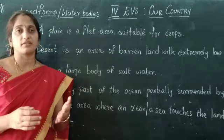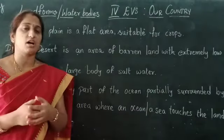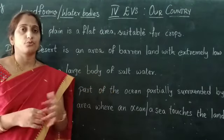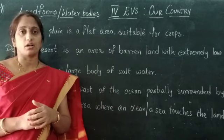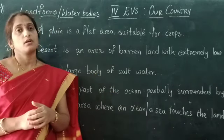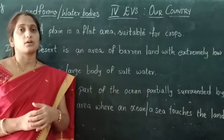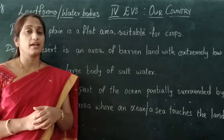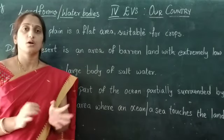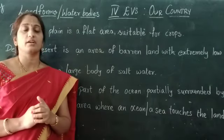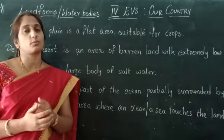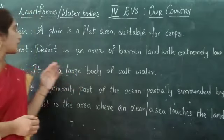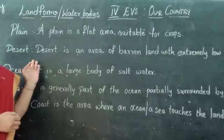For example, if we take the area near Vijayawada — nearby Uyuru and Nusmidu — those areas are called plains. Because more crops are grown there and that soil is very much suitable for crops.